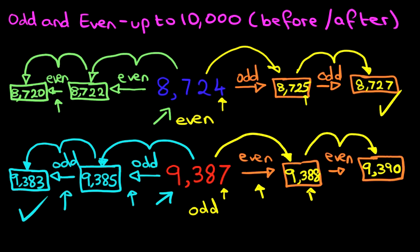It looks complicated. However, this is very, very simple. And that is how we work out the odd and even numbers with numbers up to 10,000, and numbers before and after.